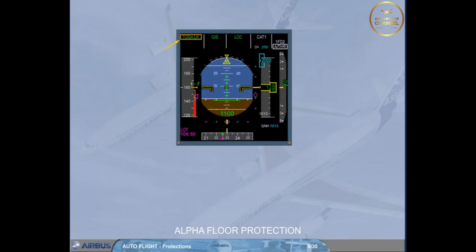To regain thrust control, you have to switch off the autothrust. You now have manual control of the thrust. You may re-engage the autothrust when convenient.